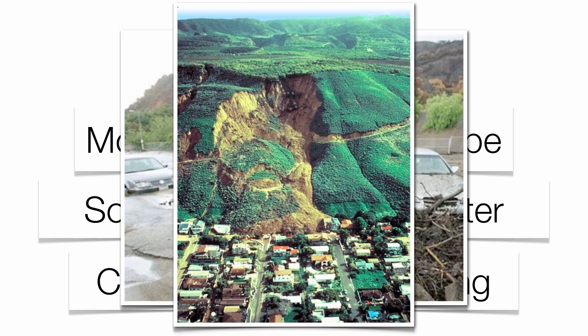This mudslide was in California, in the La Conchita area. They actually had mudslides in this area 10 years apart — one in 1995 and one in 2005. You can see that the cliff face became very unstable and actually buried a large number of homes at the very base of that cliff.